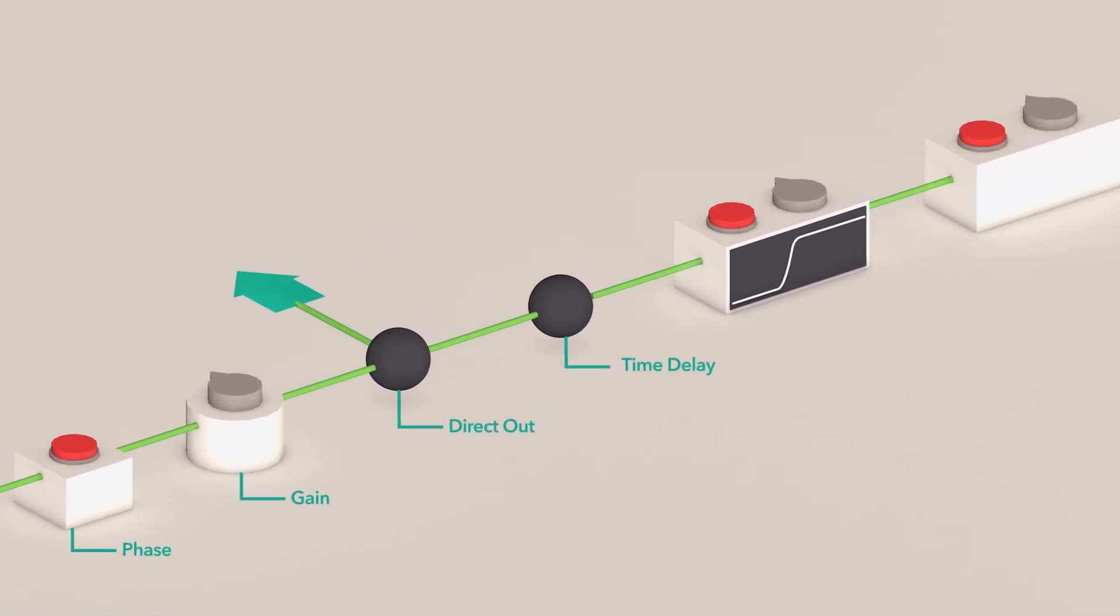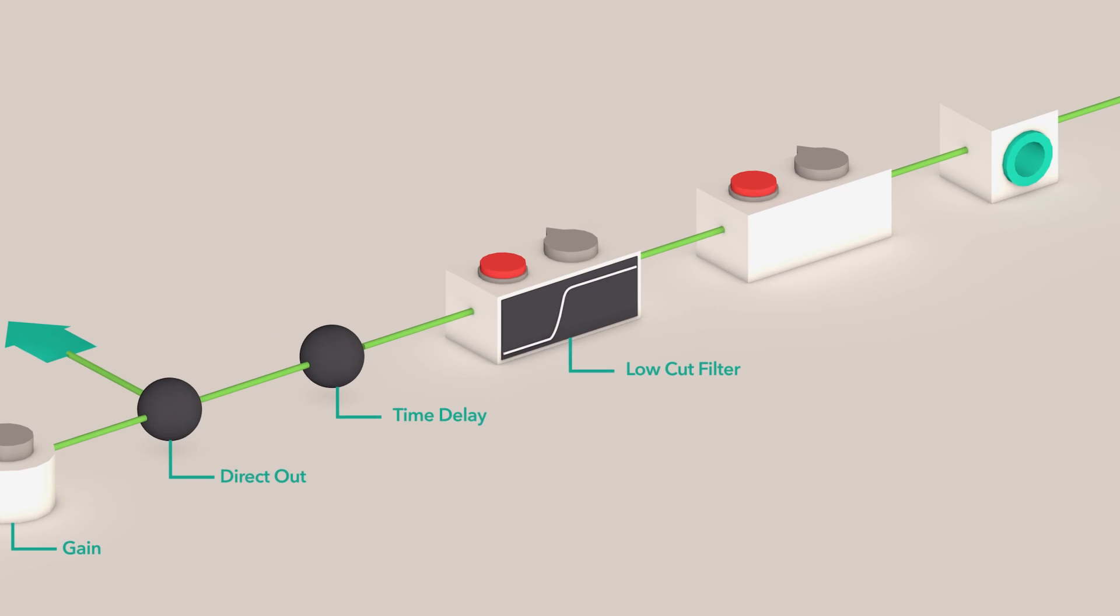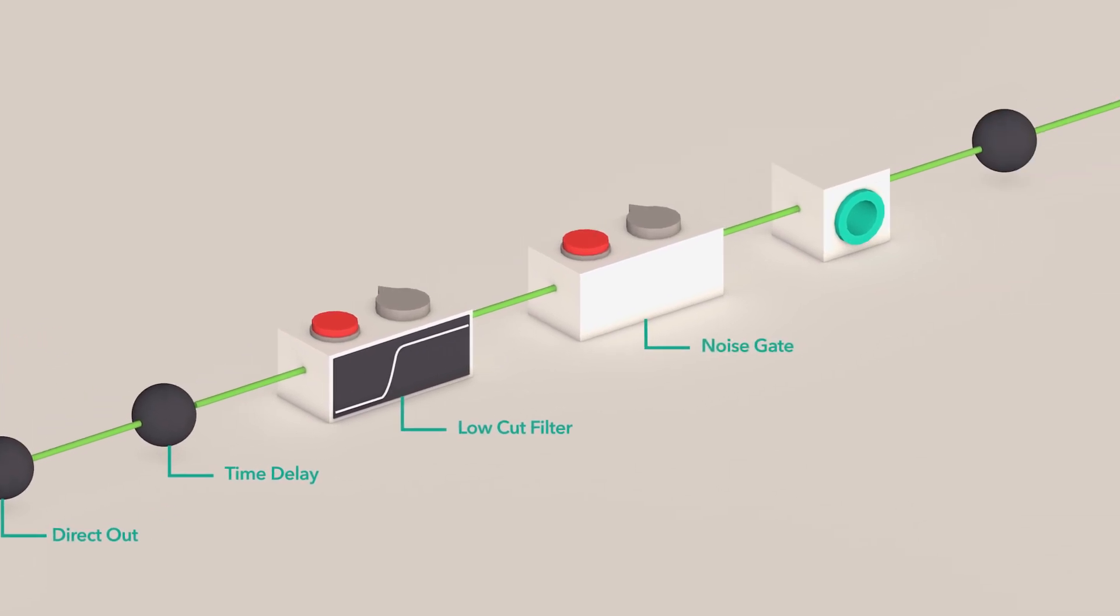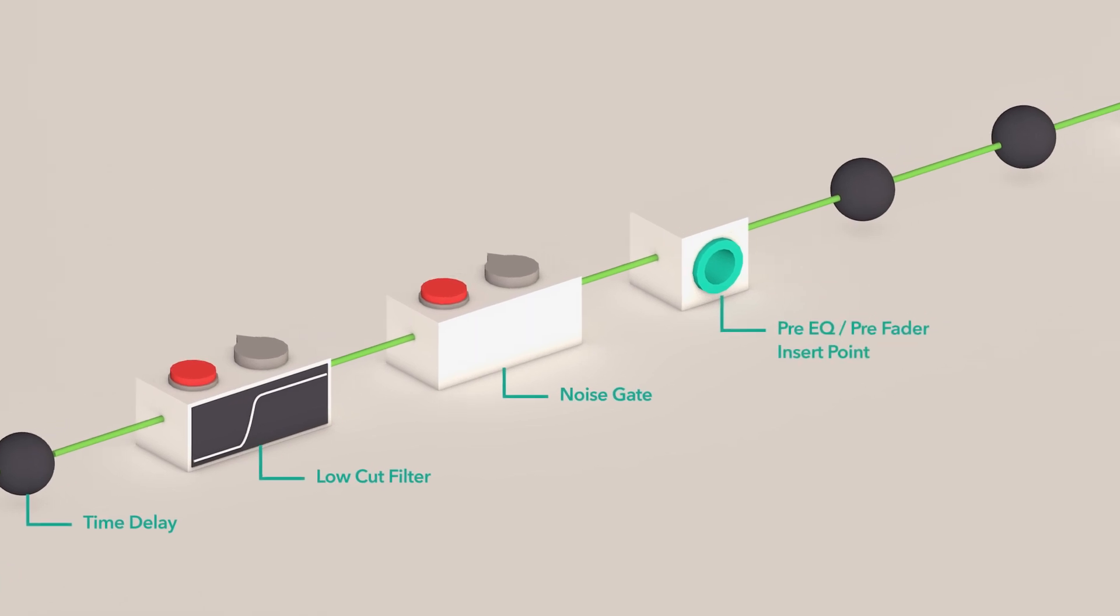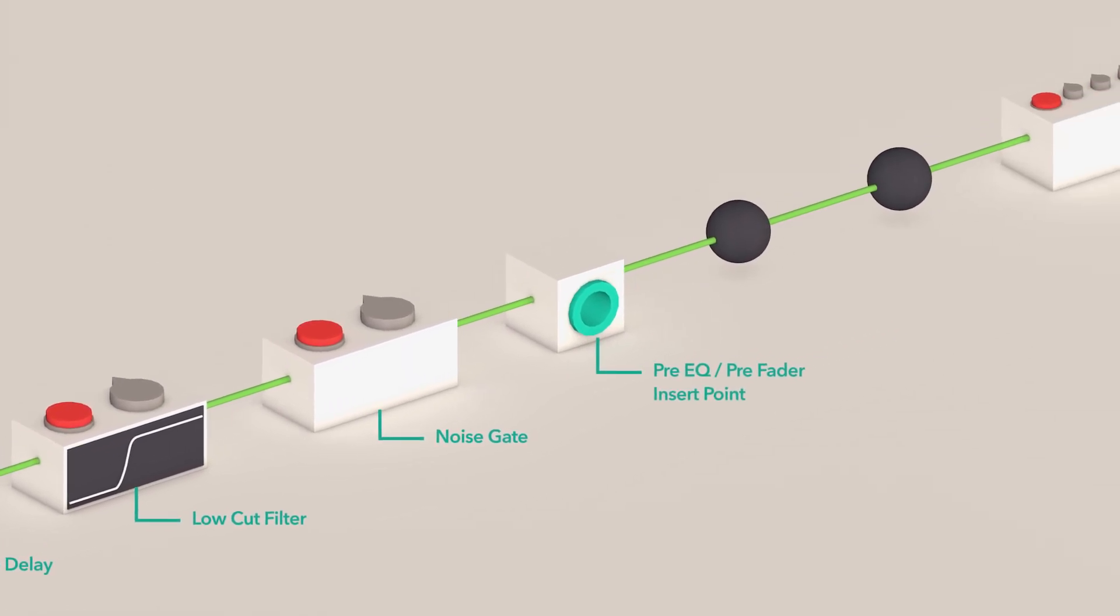We can adjust the time delay to align the signal with others that may not have the same timing. The low-cut filter cuts the low-end frequencies. The noise gate will open or shut according to the time and amount dictated. The pre-EQ pre-fader insert point is where an inserted device will be tapped prior to EQ settings.